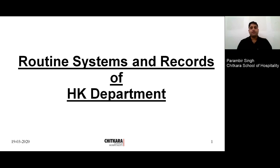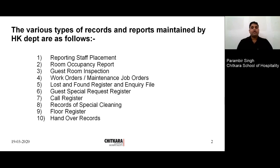There are various reports and records which are maintained in housekeeping department. The list goes: reporting staff placement, room occupancy report, guest room inspection checklist, work order, maintenance job order, lost and found register and inquiry file, guest special request register, call register, records of special cleaning, floor register and handover records. This is not the total list — there are many other records and reports maintained in housekeeping department, but we will study them accordingly when required.